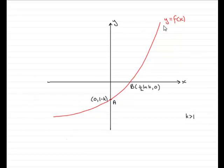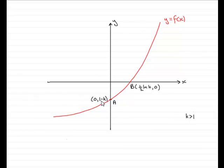What I've done is sketch what we're given — the curve of y equals f of x — and marked on where it crosses the y-axis and the x-axis at 0, 1 minus k, and this point b here, half natural log k, 0.